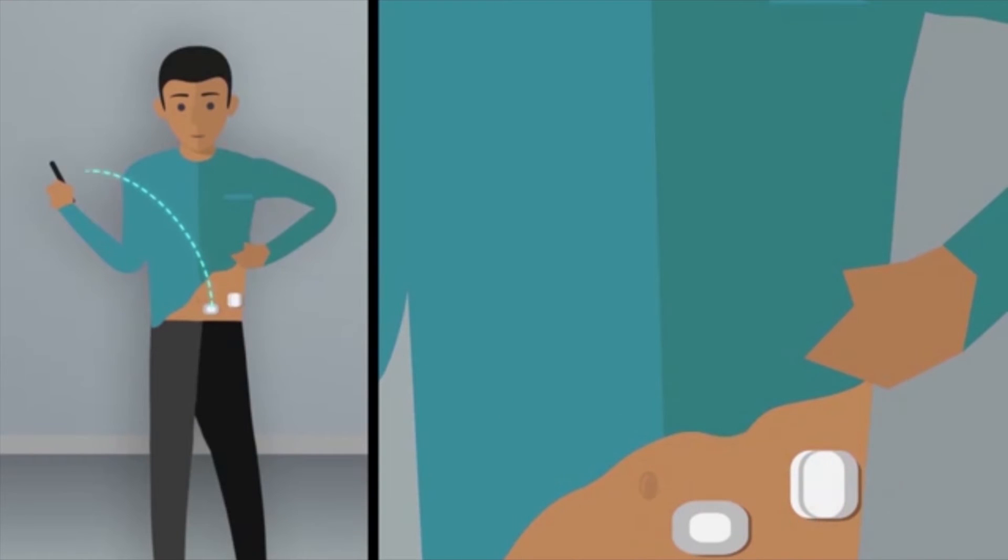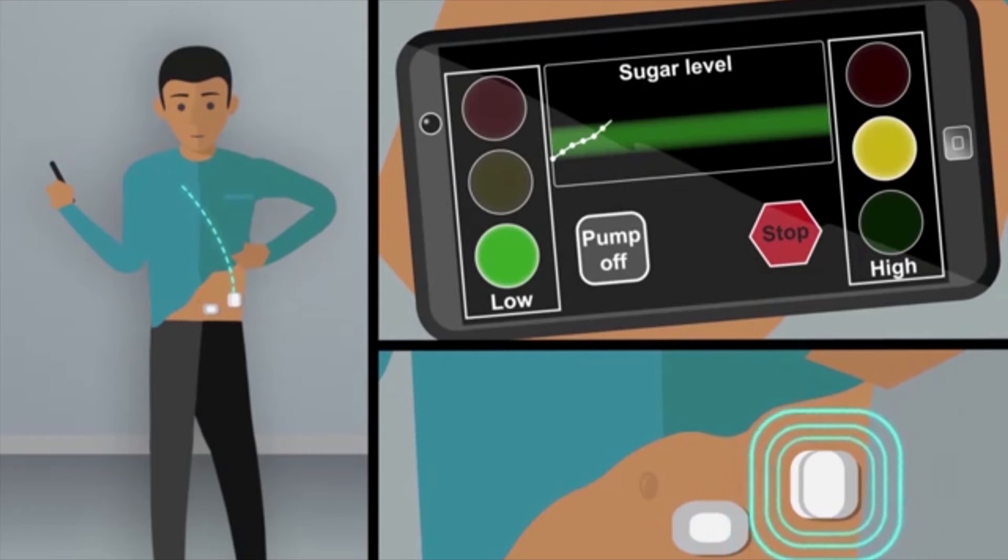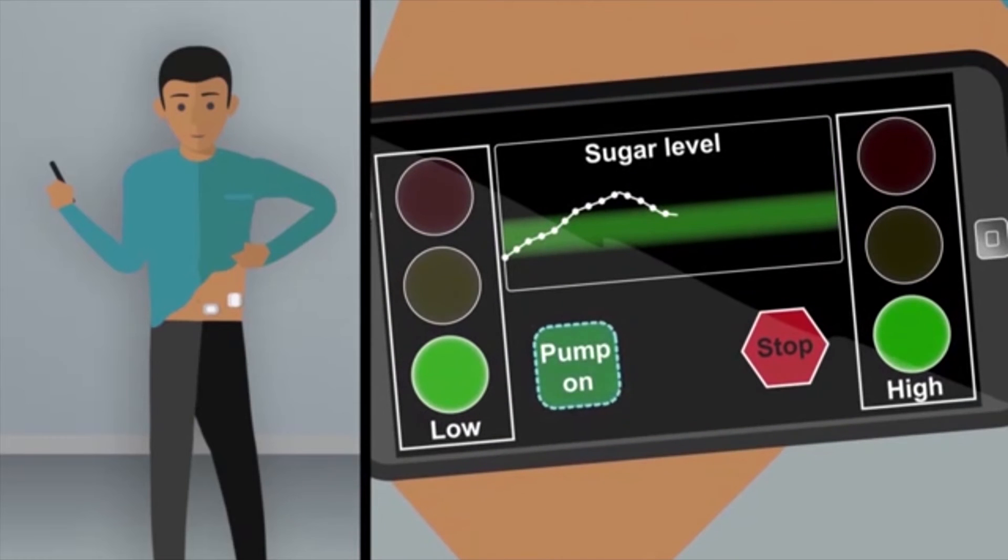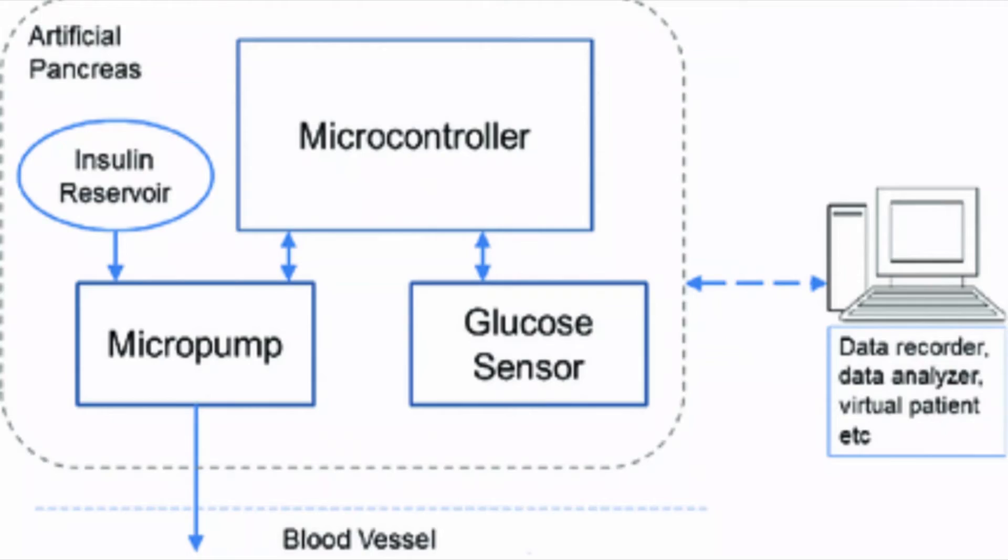It senses the blood glucose level, determines the amount of insulin needed and then delivers the appropriate amount of insulin to the blood. The artificial pancreas uses a smartphone or a computer attached to the insulin pump to continuously measure glucose in blood and insulin in the body. It then uses an algorithm to increase the insulin levels as the body needs it.